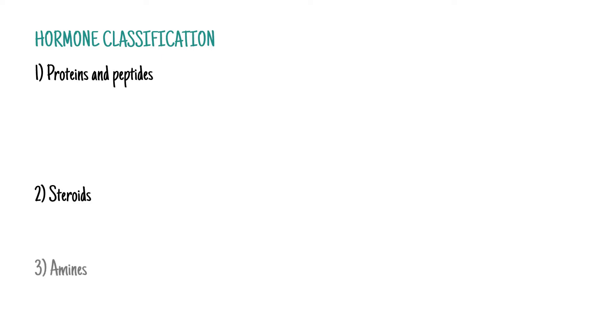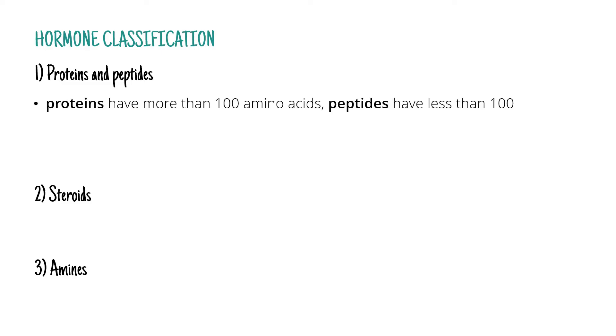The difference between peptides and proteins is that proteins consist of one hundred or more amino acids, whereas peptides have less than one hundred amino acids.